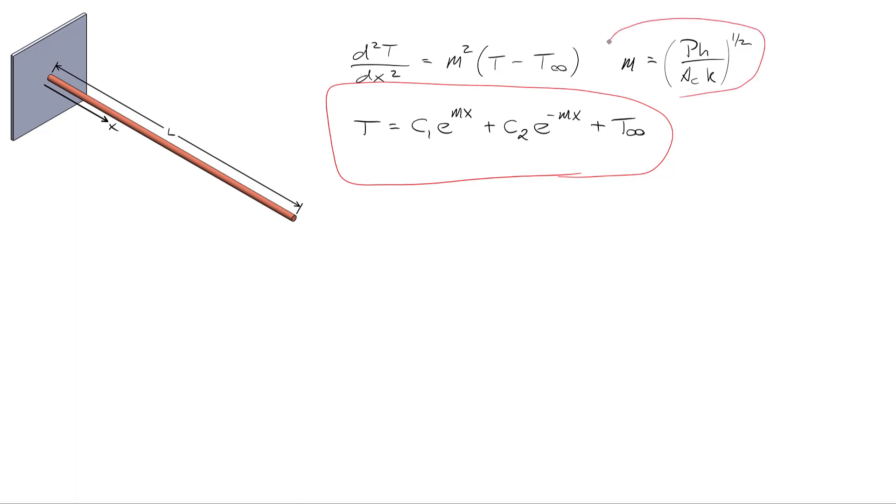In addition we defined what was called a fin parameter, this variable m, and we just used that to minimize the amount of writing. One thing to think about in terms of units, the dimensions for this fin parameter m is equal to one over meters. And that's important because each of the exponentials we need to have a unitless quantity when we exponentiate something.